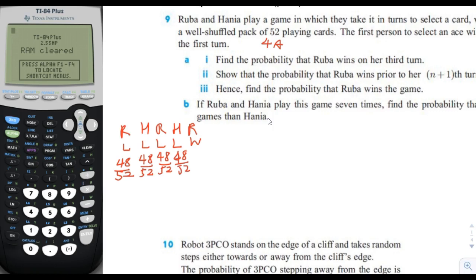Finally, on her third turn Ruba chose one of the four aces out of 52. To find the probability, multiply all the fractions together: 48 to the fourth, times 4, divided by 52 to the fifth. That is the answer for a1.